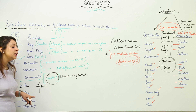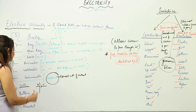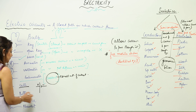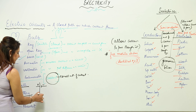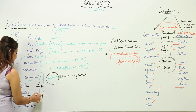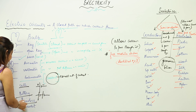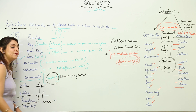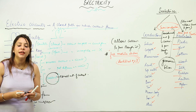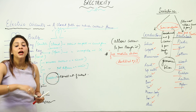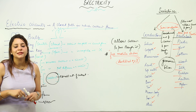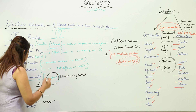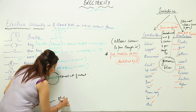A cell is denoted by one big line and one small line. The big line is the positive terminal and the other is the negative. When you connect more than two cells together, it becomes a battery. Resistance is denoted by a specific symbol. Every appliance has a certain resistance.